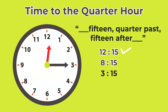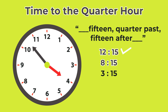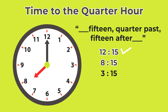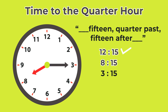Let's do eight fifteen. Well, eight fifteen — we basically go around to the eight, fifteen past eight. The hour hand is going to be slightly past the eight, and the big minute hand is going to be on the fifteen — five, ten, fifteen. So this is eight fifteen, quarter past eight.